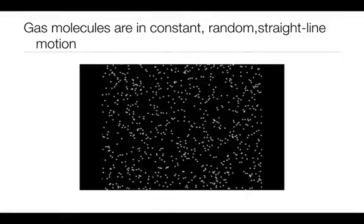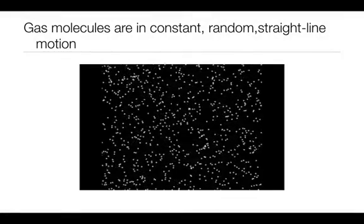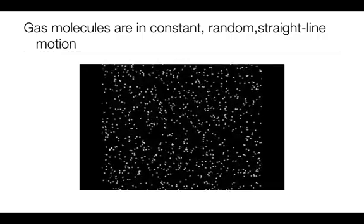The second postulate is that they are in constant random straight line motion. Pretty much the postulate says it all. If you follow one of these particles in the video, they're going to travel in a straight line. Once they hit something, they're going to bounce off, and they're going to continue to travel in a straight line just in a different direction.